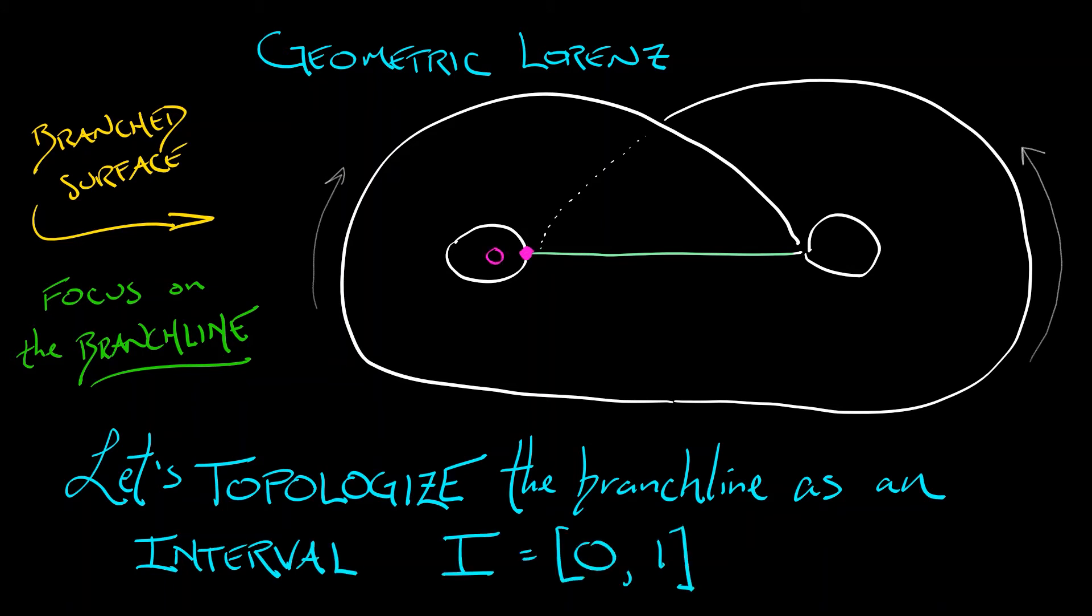Zero is going to be what we call the point on the left hand end or the left side of the branch line. And then the right side of this branch line, that point right at the boundary, we're going to call that one.